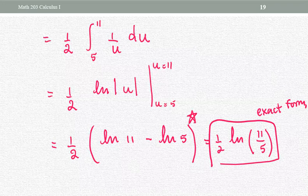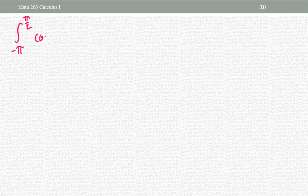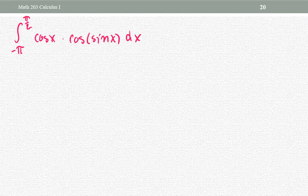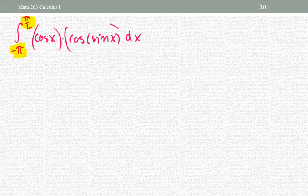Either answer form is acceptable, but the log-of-quotient form is even better. Any questions for this problem? Alright, another example: the definite integral from negative pi to positive pi over two of cosine x multiplied by cosine of sine x — a definite integral of a product of two cosine functions.